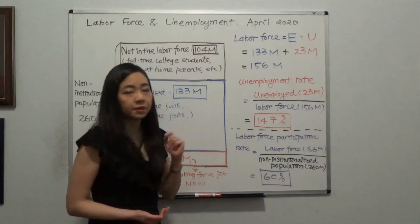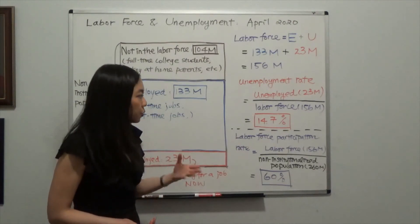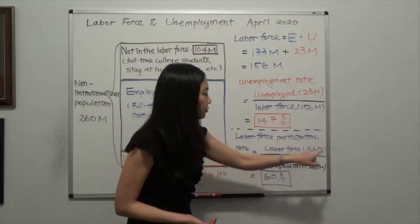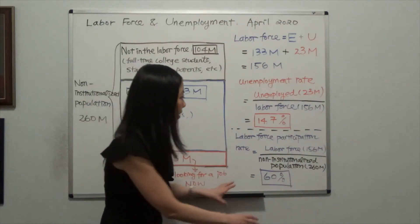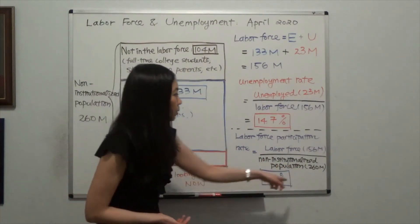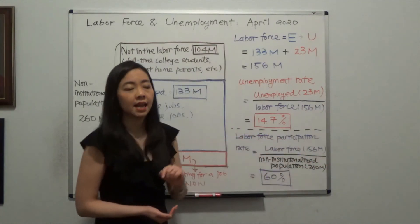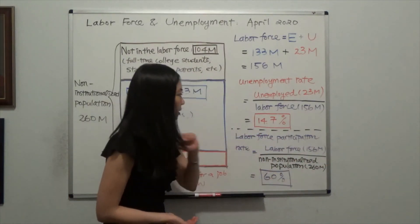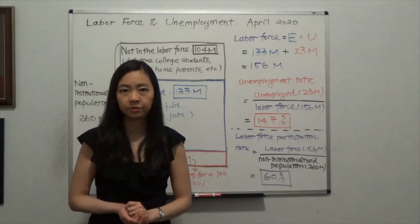The labor force participation rate is calculated by taking the labor force, 156 million, divided by the total non-institutionalized population, 260 million. That gives you 60% for the labor force participation rate.